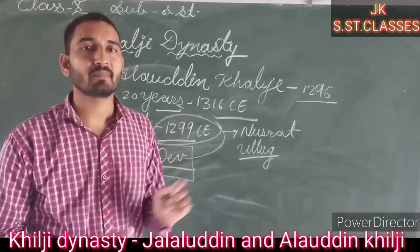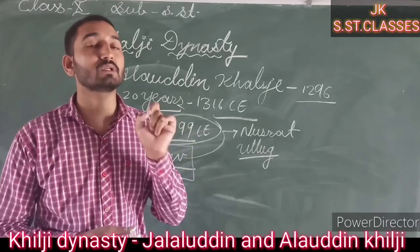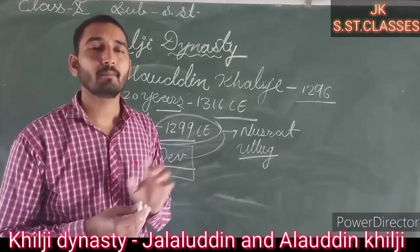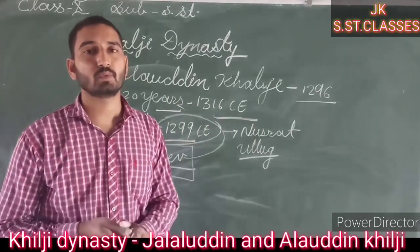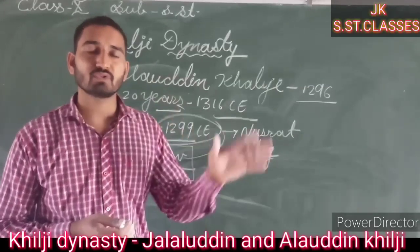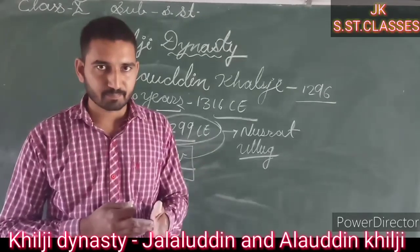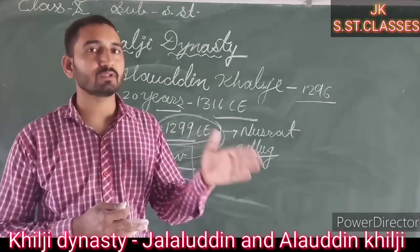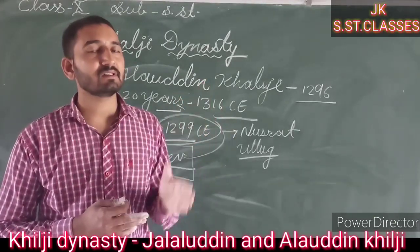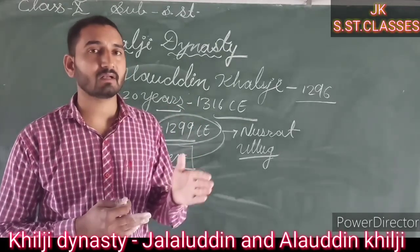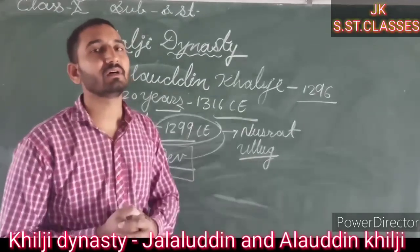The Somnath Temple was invaded seven times in total. First by Mahmud Ghaznavi, then Muhammad Ghori, then Alauddin Khalji, and the last by Aurangzeb — total seven times it was looted by different Muslim rulers. It was reconstructed four times: in 1026 by the Rajput ruler of Gujarat, Bhimpal I; then by Kumar Pal; and in 1765 CE by Ahilyabai. The temple was also invaded by the army of Alauddin Khalji.